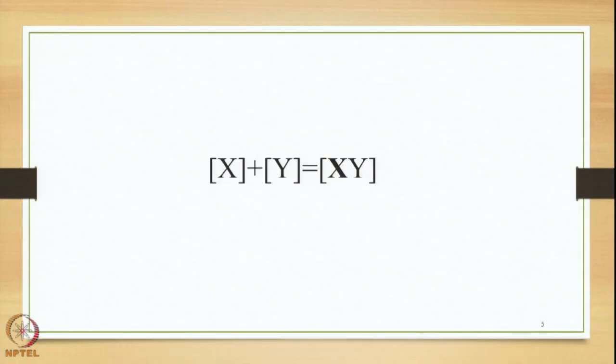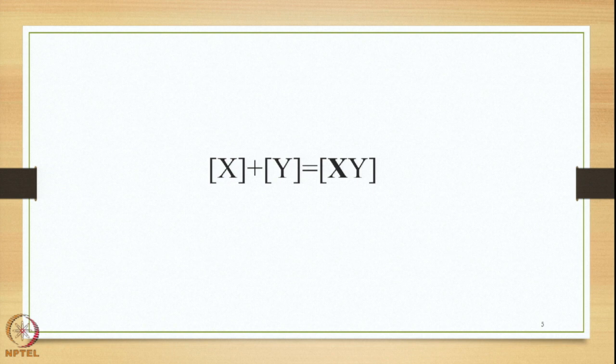The features of this Avyayibhava Samasa can be explained using a simple equation where we have X and Y — two independent separate entities in terms of word form, meaning, and accent. X has its own word form and meaning, so also Y. X has an accent and Y also has an accent. Now these two X and Y are semantically interrelated. The speaker of Sanskrit decides to merge them together, and the output XY is generated as one unit in terms of word form as well as meaning.